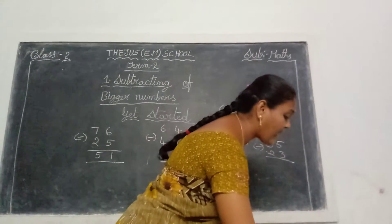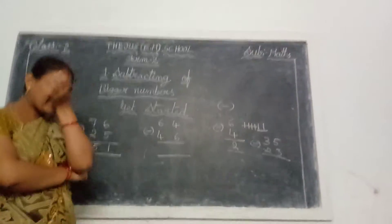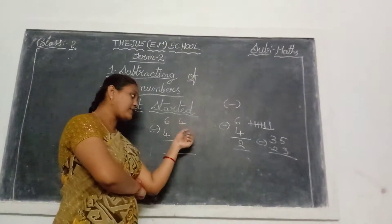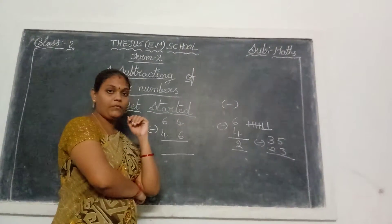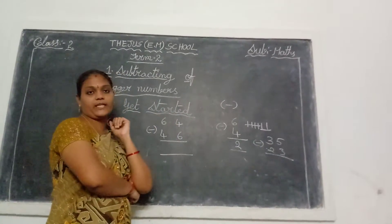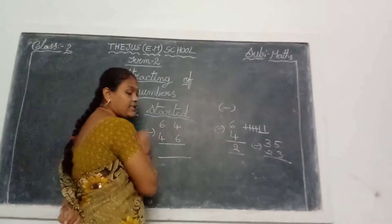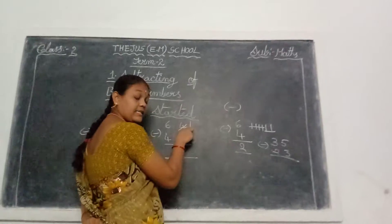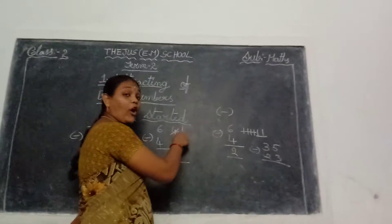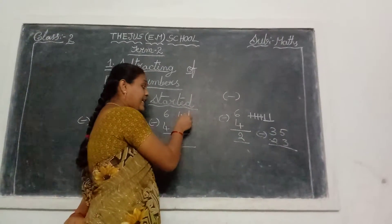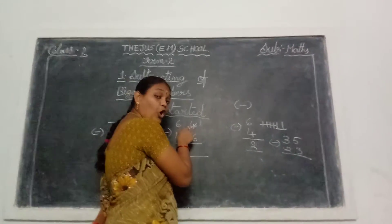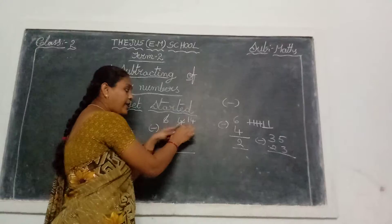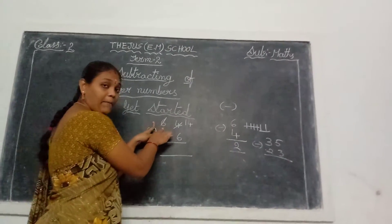Which type of subtraction is this? Normally you take 4 fingers and close 6 fingers — is that possible? No. This is borrowing subtraction. 4 minus 6 is not possible. So this 4 is taking a borrowing from the 6 — 1 number, which means 10. That means 10. Already explained this in previous classes: that 1 means 10. That 10 plus 4 equals 14. So 6 gives 1 number as borrowing to this 4.